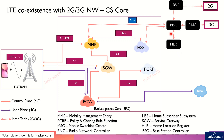For CS services, communication from the user goes from the eNodeB towards the MME. However, in this case we are not going towards the SGW or PGW — instead, we go straight to the MSC, which is the interworking node between the 2G/3G and LTE networks. This connectivity is important to establish the CS call, and we'll discuss the detailed flow in the subsequent slide.